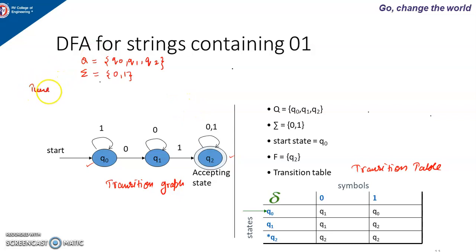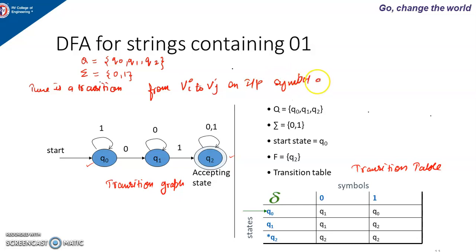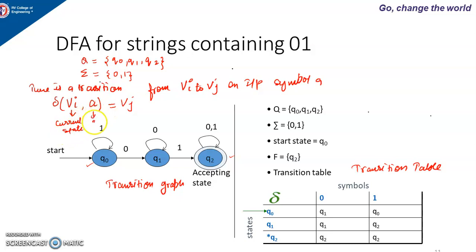If there is a transition from state Vi to state Vj on input symbol a, we represent it using a transition function delta. We write delta of the current state Vi and the input alphabet a, and the next state is Vj. The transition function always takes two parameters: first, the current state, and second, the input alphabet. The final output will be the next state.